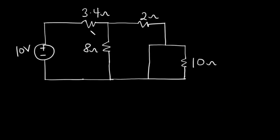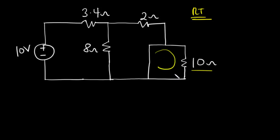Now let's solve our very last example. We want to find the total resistance for this particular circuit. We realize that the 10-ohm resistor has been short-circuited, because you can go through that loop without passing through any other circuit element except the 10-ohm resistor. So this is a short circuit. Because we have a short circuit here, the current is going to move through that direction, ignoring the 10-ohm resistor.